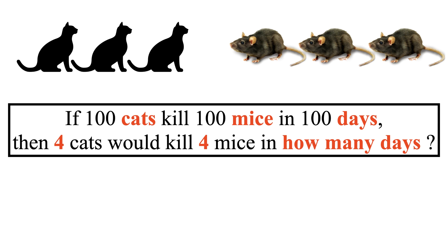The riddle states that if 100 cats kill 100 mice in 100 days, then 4 cats would kill 4 mice in how many days?